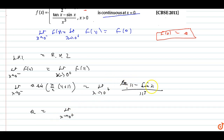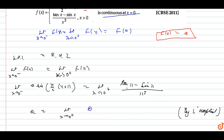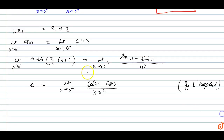Substituting x = 0 directly gives 0/0 form, so we apply L'Hôpital's rule. Differentiating numerator and denominator: we get (sec²x − cos x) upon 3x². Again substituting gives (1 − 1) upon 0, which is still 0/0 form, so we apply L'Hôpital's rule again.